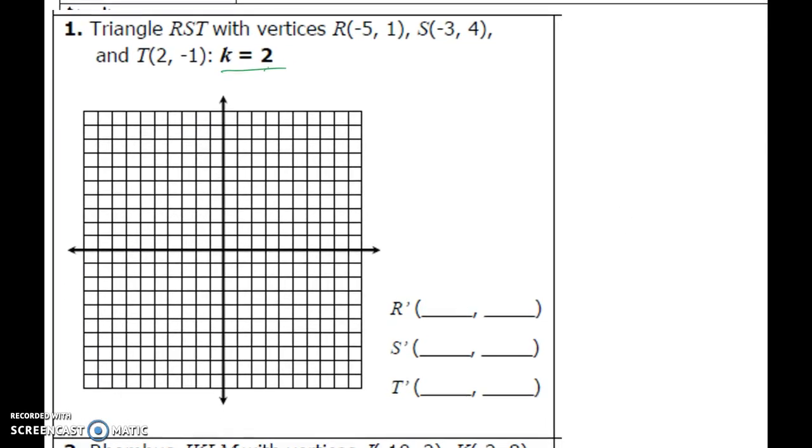So let's do an example where I will start with my pre-image, and then I will find the new one. Triangle RST has vertices R(-5, 1), S(-3, 4), and T(2, -1). So there's R, S is negative 3, positive 4, and T is 2, negative 1. Here's my pre-image. And then I need to apply a scale factor of 2. So a scale factor of 2 means twice as large, so it's an enlargement. And the easiest way is really and truly just multiply coordinates by 2, multiply coordinates by K, which is 2.